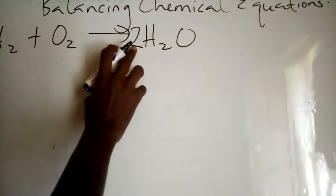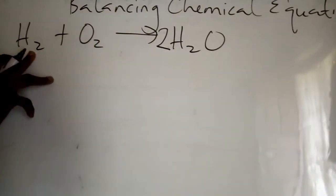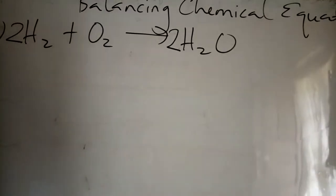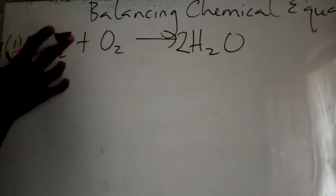But now our hydrogen is four. Two times two gives us four. And here it's just two. So you add 2 here. The equation is now balanced: 2H2 + O2 → 2H2O. If you do an atom count, we have four hydrogen and two oxygen on each side.